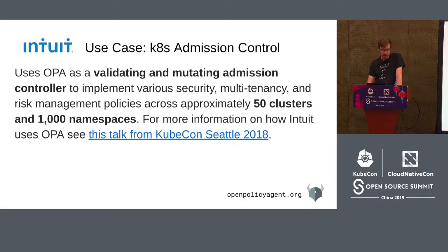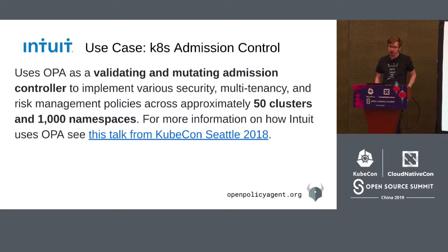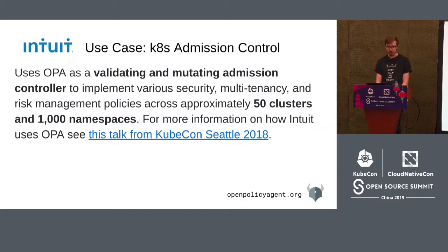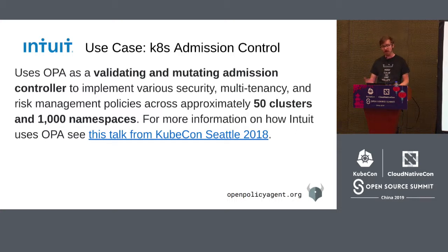An example of a company using OPA for Kubernetes is Intuit. They use OPA as a validating and mutating admission controller in Kubernetes to enforce security, multi-tenancy, and risk management policies across a large set of clusters and namespaces. They have large multi-tenant workloads deployed on Kubernetes and it's very important to put safeguards in place to prevent different applications from interacting with each other in bad ways. We did a talk with them at KubeCon Seattle 2018 — check it out if you're interested in admission control and how companies like Intuit and Capital One are using OPA.